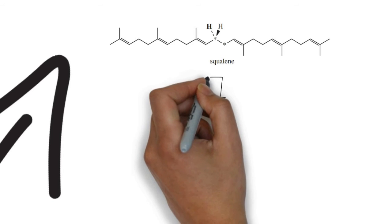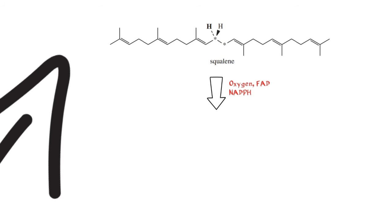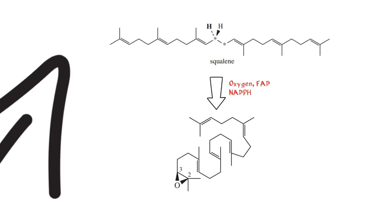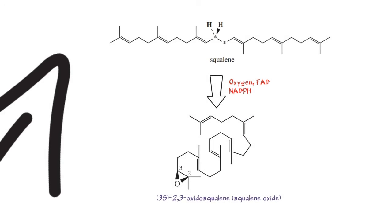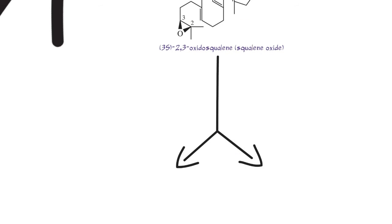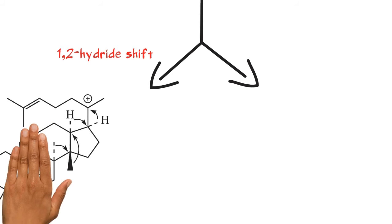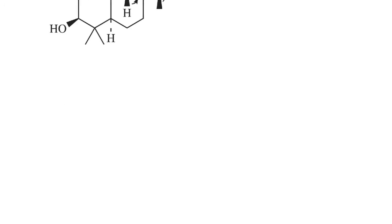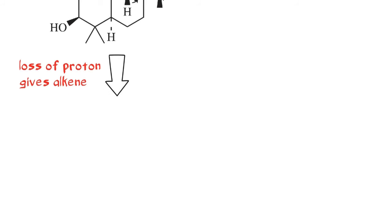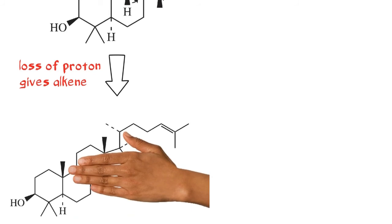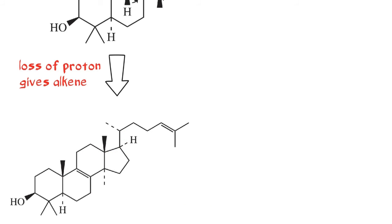Squalene then reacts with O2, FAD, and NADPH to form 2,3-oxidosqualene. The cyclisation of 2,3-oxidosqualene makes two isomers. For the 1,2-hydride shift protosteroid cation, the loss of proton gives an alkene which produces lanosterol.